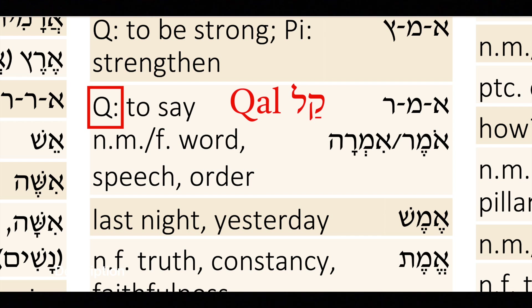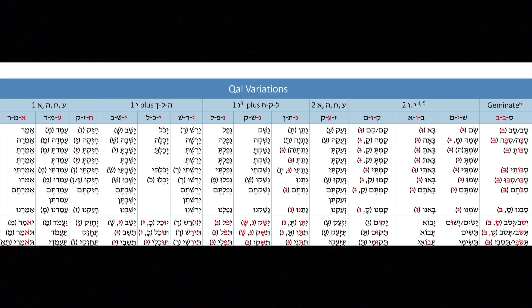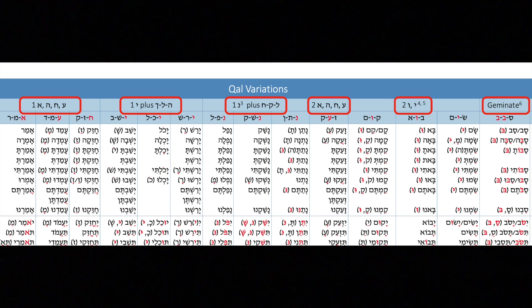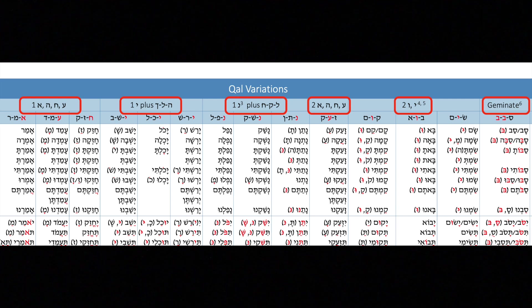That means in order to look up this verb, we really want to look at the Qal variations chart. And we'll notice here that there are a number of columns. Each column is differentiated based on the characteristics of the three-letter root that you have.